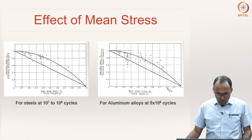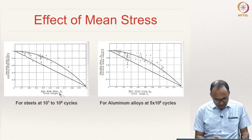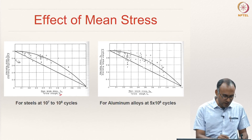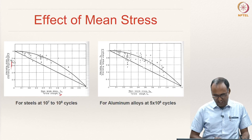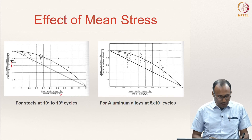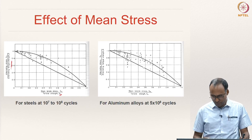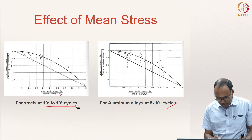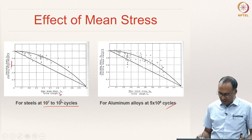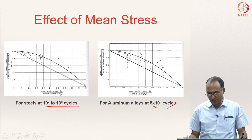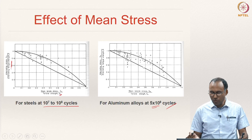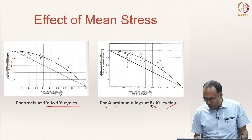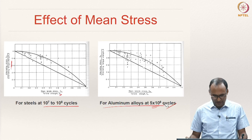The mean stress is normalized with ultimate strength and the alternating stress is normalized with the alternating fatigue strength, as discussed. That is why the axes range between 0 and 1. This data is for aluminum alloys. The first steel set corresponds to 10^7 to 10^8 cycles, and for aluminum alloys it is at 5×10^8 cycles.